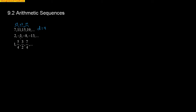How do you get from 2 to negative 3? If you do some side work, negative 3 minus 2 is negative 5. So if we subtract 5: 2 minus 5 is negative 3, negative 3 minus 5 is negative 8, negative 8 minus 5 is negative 13. So our common difference here winds up being negative 5.